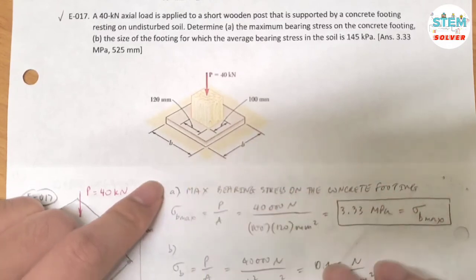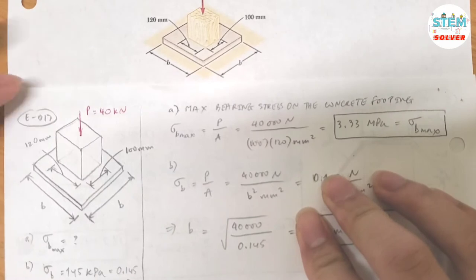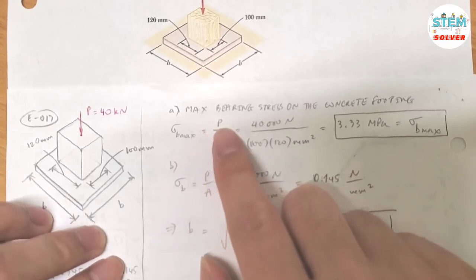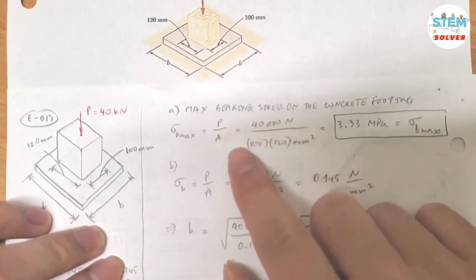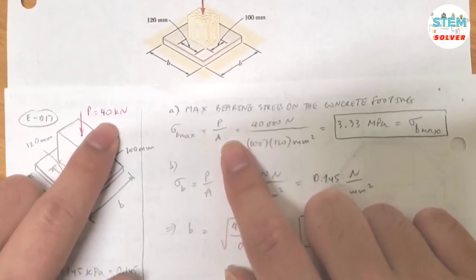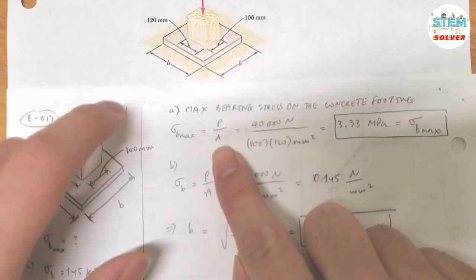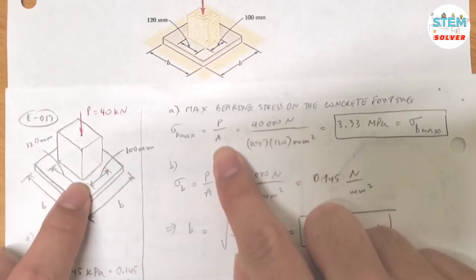So this is the diagram for it, I just redrew it. The maximum bearing stress on the concrete footing is equal to the force divided by the area. The force is 40 kN, so I have 40,000 N divided by the area. And the area of the post is equal to...